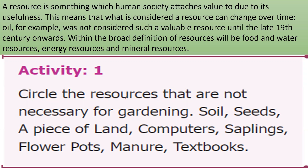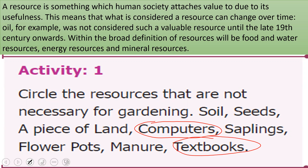Circle the resources that are not necessary for gardening. Soil — yes, soil is of course very much essential for gardening. Seeds — needed. A piece of land — definitely needed. Computers — computers are not needed for gardening. Saplings — needed. Flower pots — definitely needed. Manual — needed. Textbooks — textbooks are not the resources required for gardening. So the answer for this activity is computers and textbooks. Of course they are resources for humans, but for gardening, computers and textbooks are not the resources.